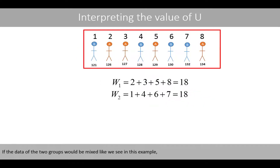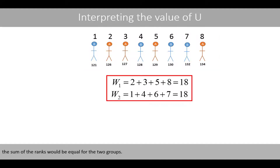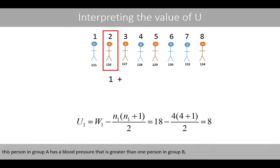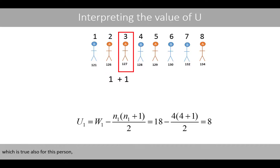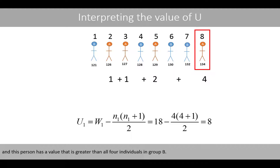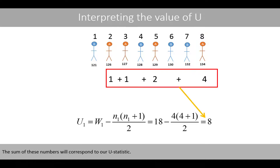If the data of the two groups would be mixed, the sum of the ranks would be equal for the two groups. The U statistic for the first group is in this example equal to 8, which can be interpreted as follows: one person in group A has a blood pressure greater than one person in group B, which is also true for another person. One person has a blood pressure greater than two persons in group B, and one person has a value greater than all four individuals in group B. The sum of these numbers corresponds to our U statistic.